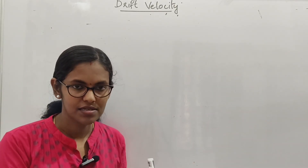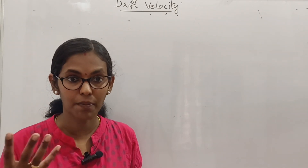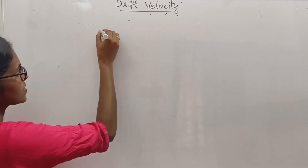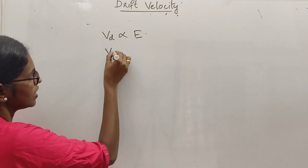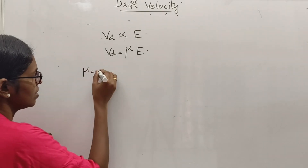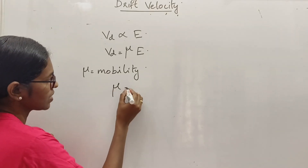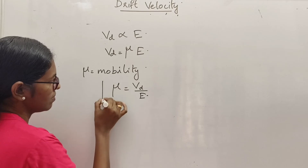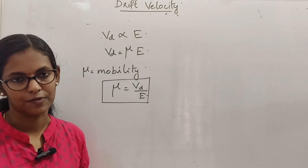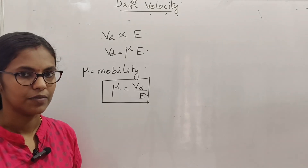The electric current is proportional to drift velocity, and drift velocity is proportional to the applied electric field. Therefore, Vd is equal to a constant mu into E. That constant mu is known as the mobility. Mobility mu is equal to Vd divided by E. That means mobility is the ratio of the drift velocity to the applied electric field.